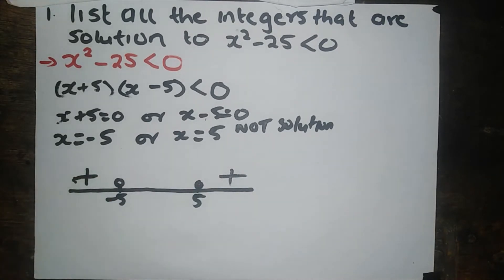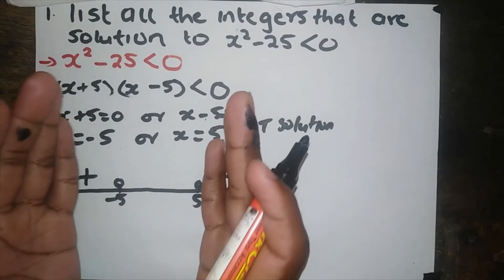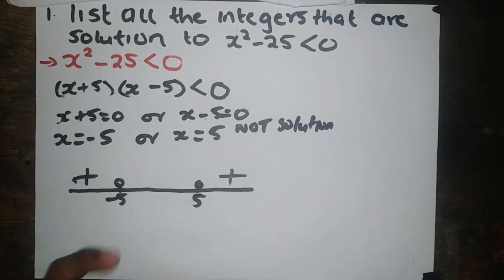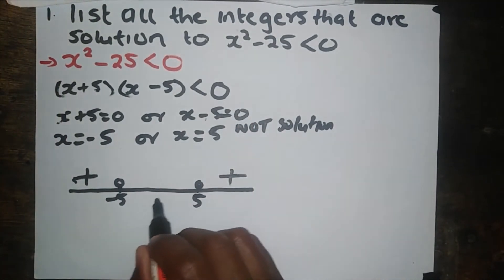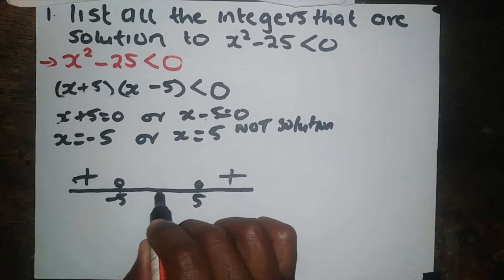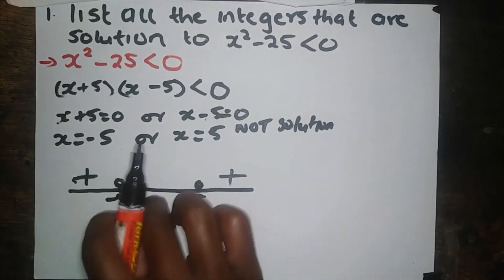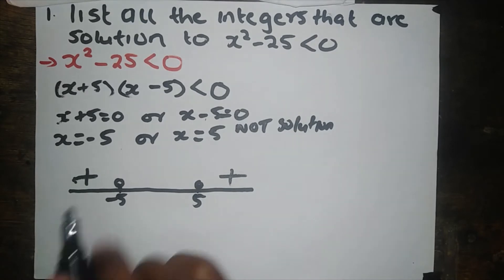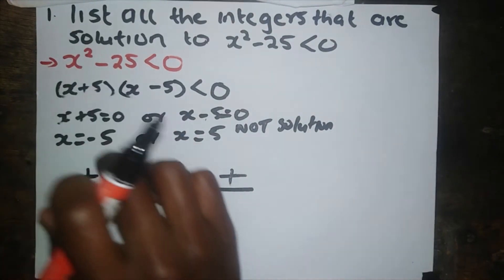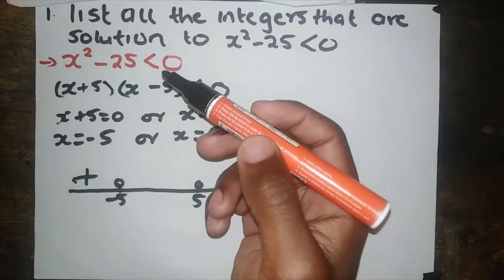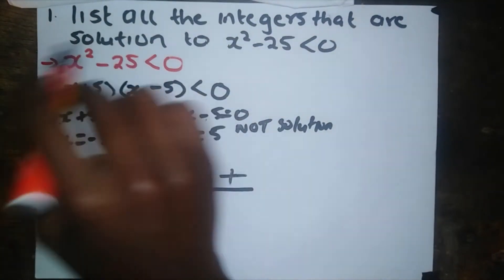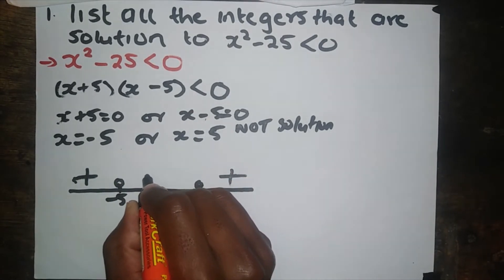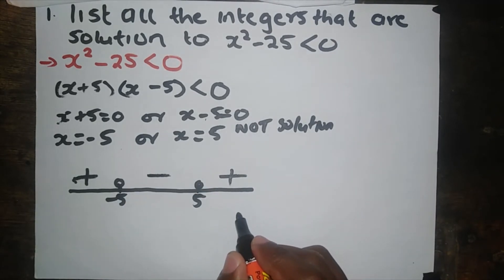You get what I'm saying, guys? Okay, let's now check the values which are between negative 5 and positive 5. You can take any value, but I'm going to take 0. So we substitute 0 back to the equation, we're going to get negative 25. And that's what we're looking for — we need a value that when we substitute it, we get a negative value.